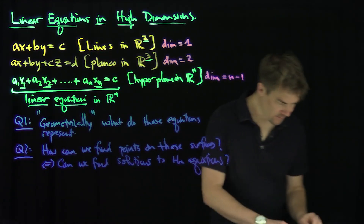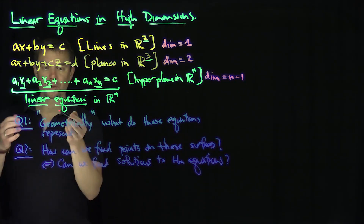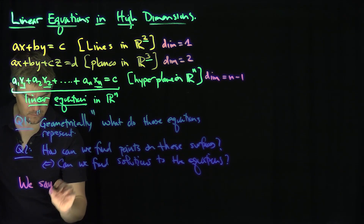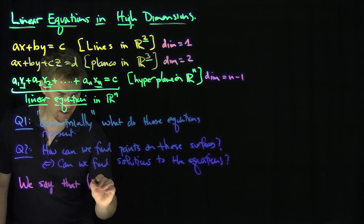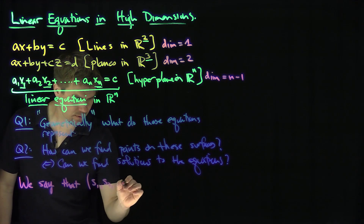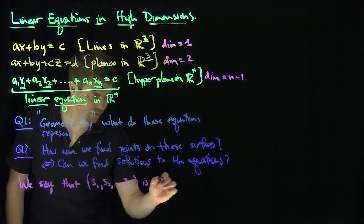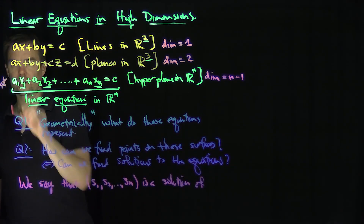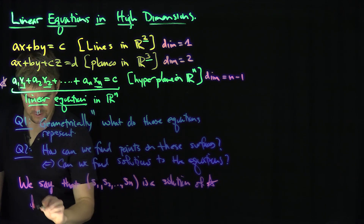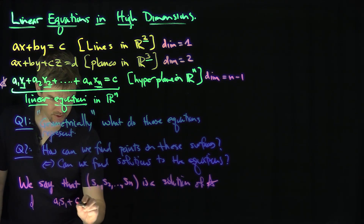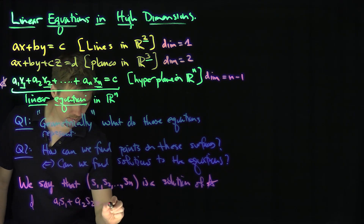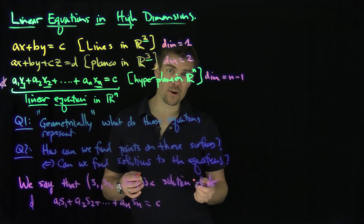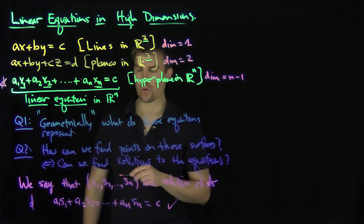Finding solutions is actually fairly simple. We say that (s1, s2, ..., sn) is a solution of the equation — let's call it star — if a1s1 plus a2s2 plus ansn is equal to c. In other words, when you plug it into the equation, you actually get the right value — it just satisfies the equation.